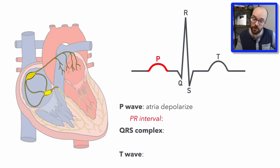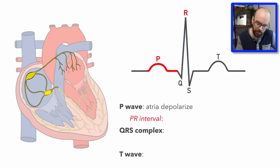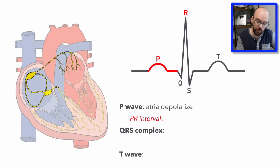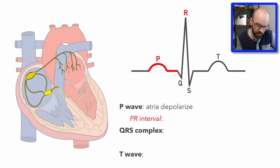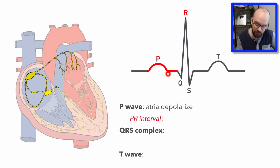Next we have the PR interval, which starts at the beginning of the P wave and lasts until the Q portion. We call it the PR interval because sometimes the Q wave is hard to identify or may not show up on an ECG. You might also see the PR segment: the PR interval runs from the beginning of P all the way to R, while the PR segment is just from the end of P to the beginning of R.